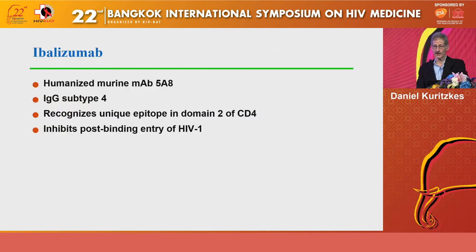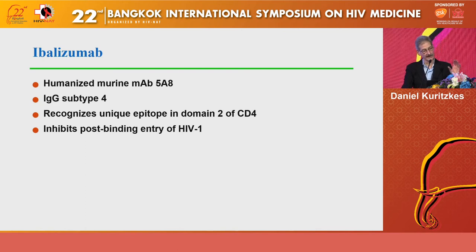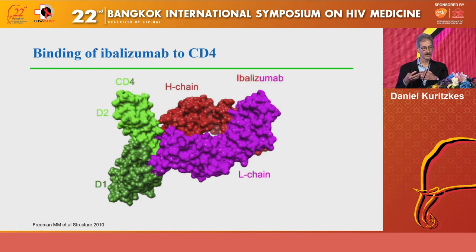Turning to newer drugs for patients with highly resistant virus — the first is a monoclonal antibody called ibalizumab. Ibalizumab was initially isolated in mice, targets the second domain of the CD4 molecule, and was genetically re-engineered to be humanized to reduce immunogenicity. It inhibits post-binding entry of the virus: the heavy and light chains bind to the second domain of CD4, leaving available the tip of the CD4 molecule to which gp120 binds, but the virus cannot undergo the necessary rearrangements to engage the co-receptor and proceed with viral fusion.